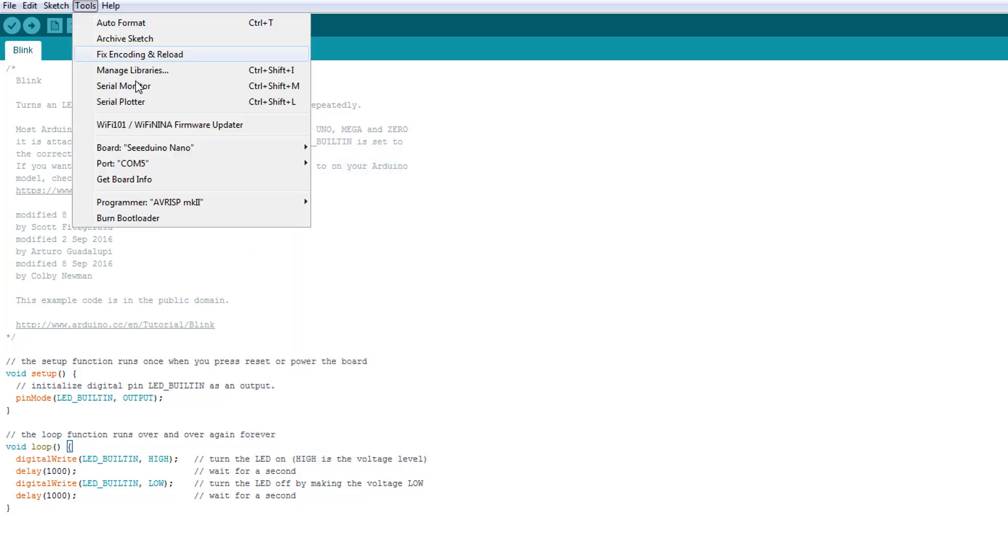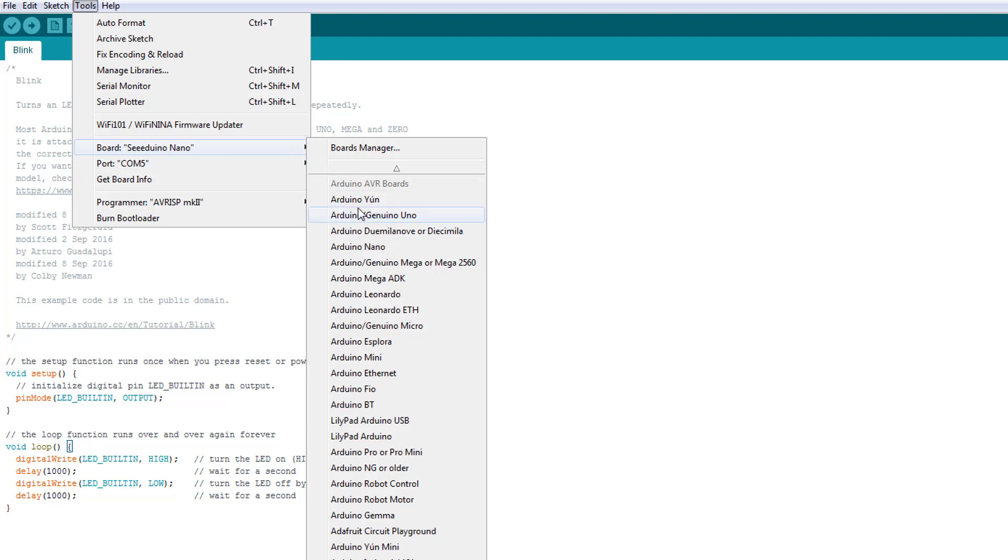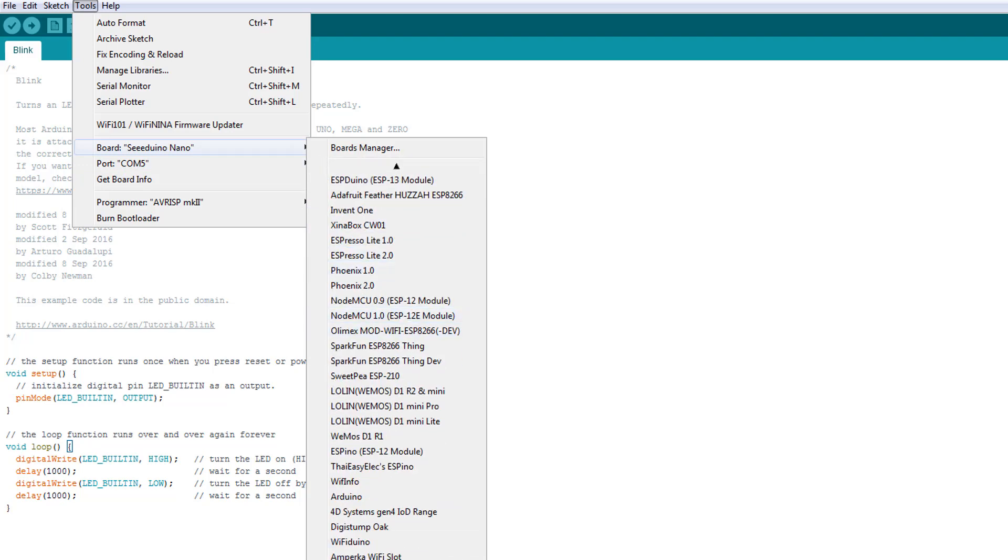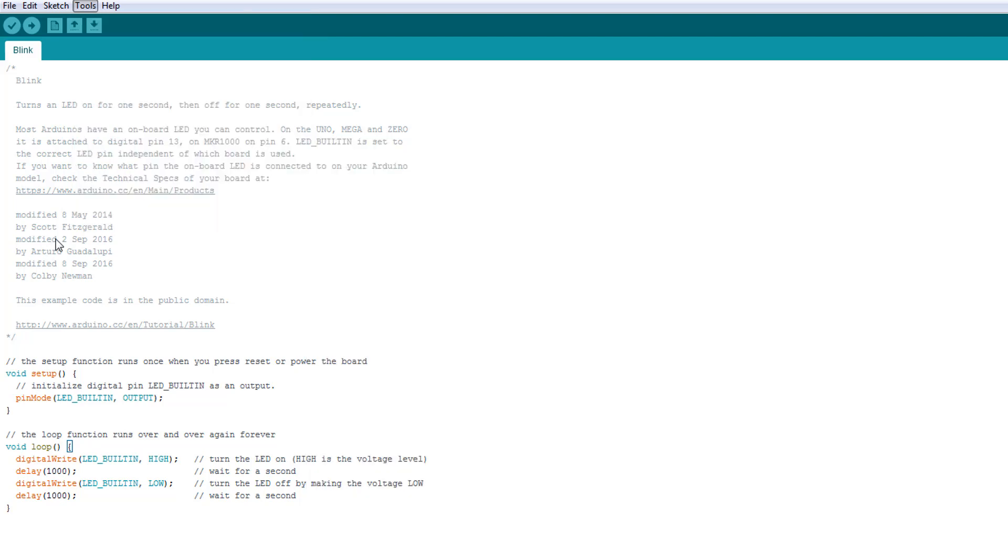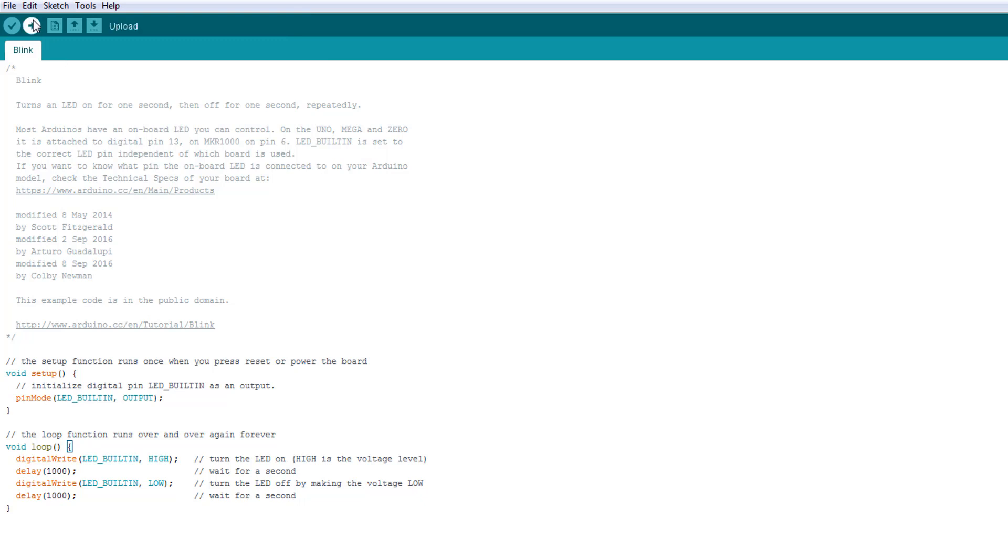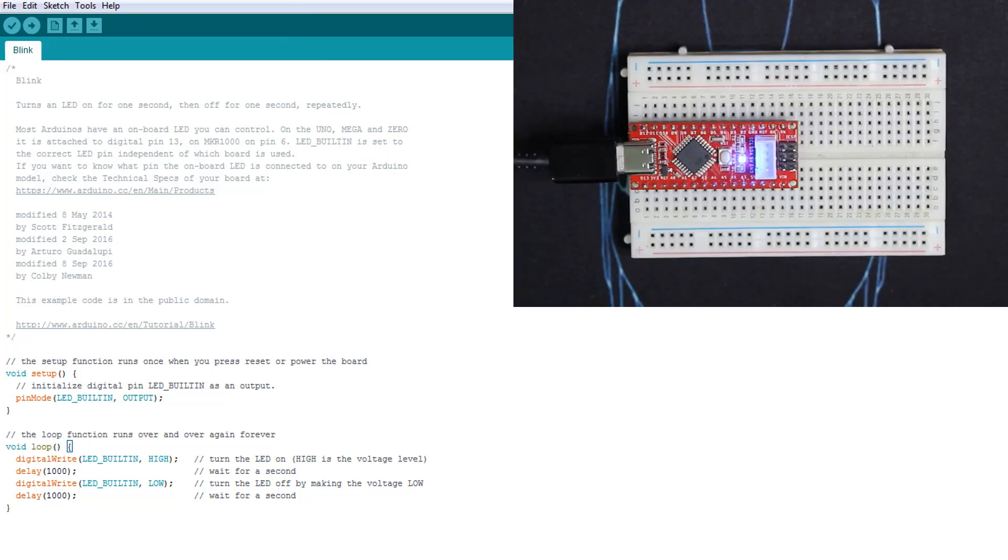Wait for the download a little bit. Here you write 'seeed'. Automatically you'll get Seeeduino AVR. Here you press Install, install the latest version of course. Then you'll go to Board and select Seeeduino Nano.